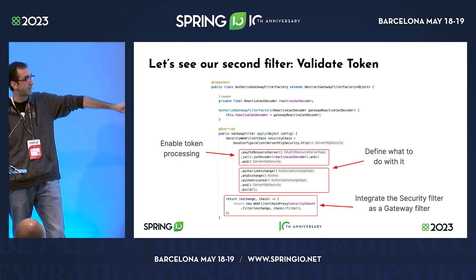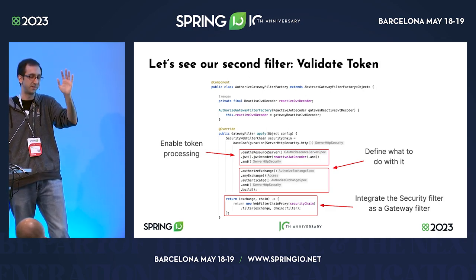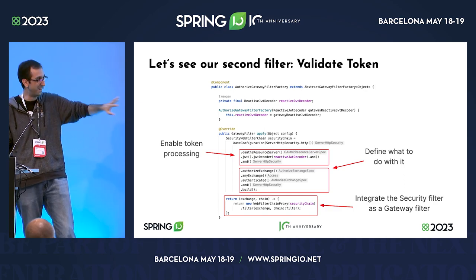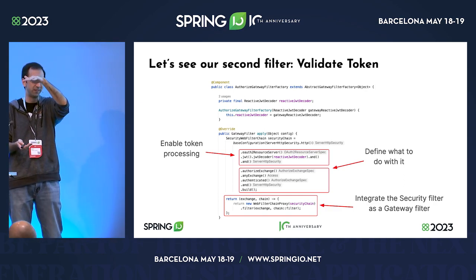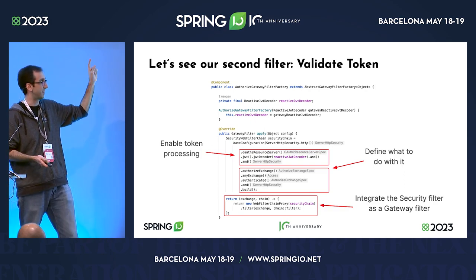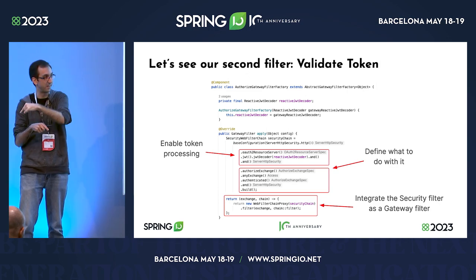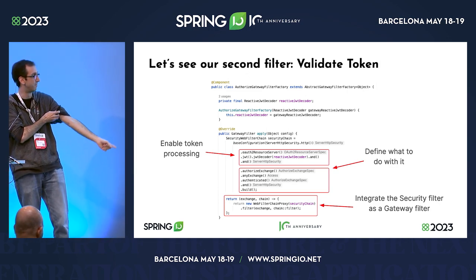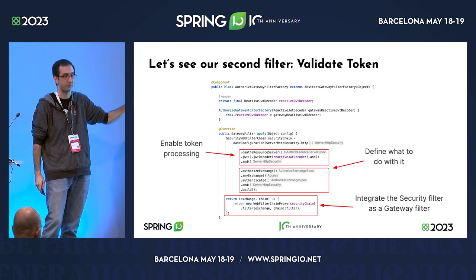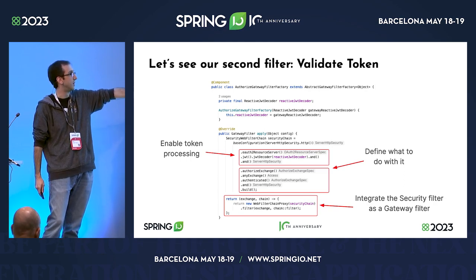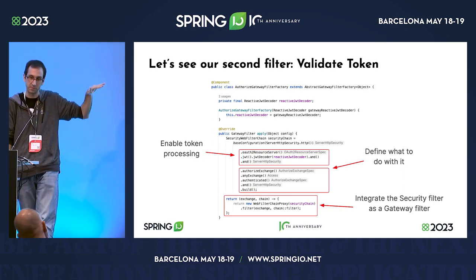I admit the first time I saw it, I was like — wait, that's like inception squared. The Gateway has a filter chain of filters, and then we also have a security filter chain, and we are having one inside the other. It's normal to feel a little mislead the first time. Once you understand this, you can do any kind of security configuration for a specific filter.